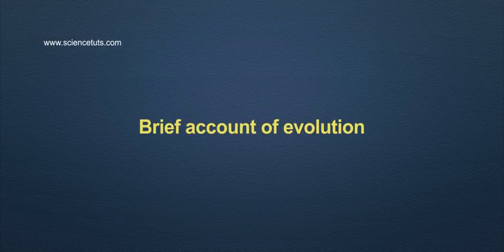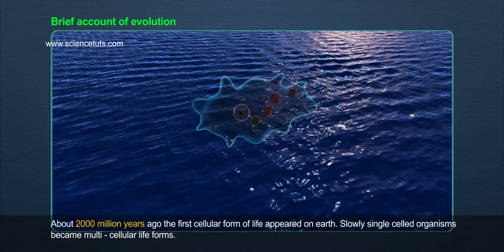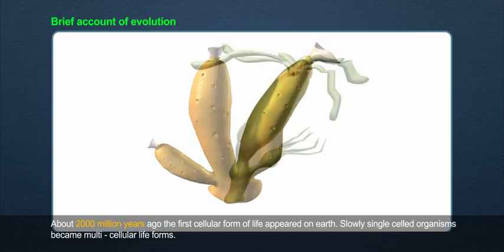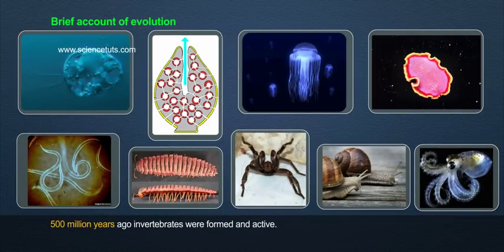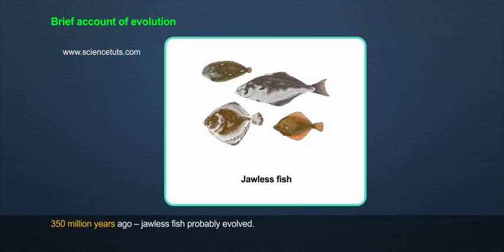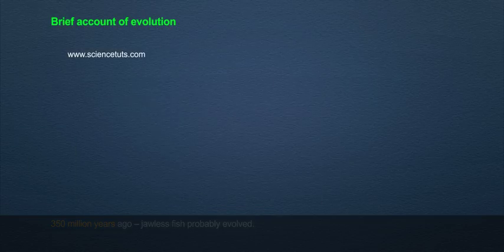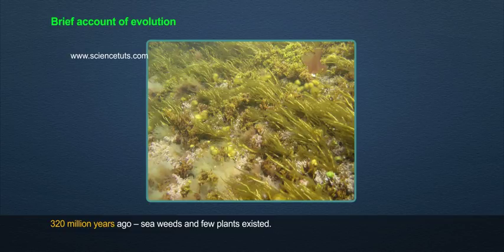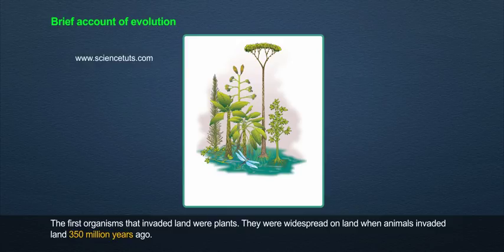About two thousand million years ago, the first cellular form of life appeared on Earth. Slowly, single-celled organisms became multicellular life forms. 500 million years ago, invertebrates were formed and active. 350 million years ago, jawless fish probably evolved. 320 million years ago, seaweeds and few plants existed, and the first organisms that invaded land were plants.